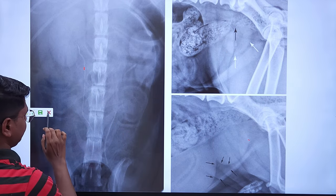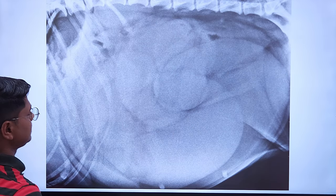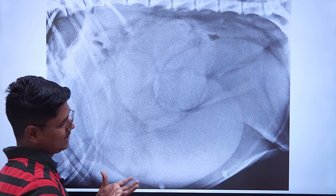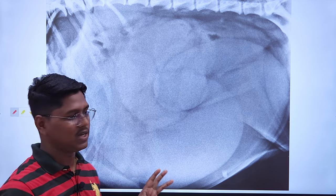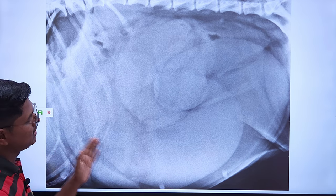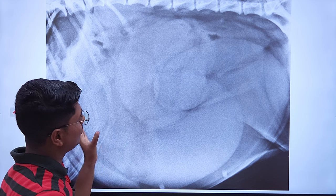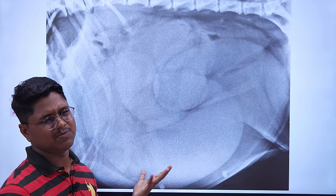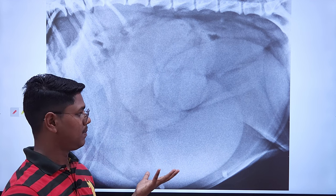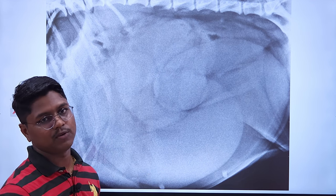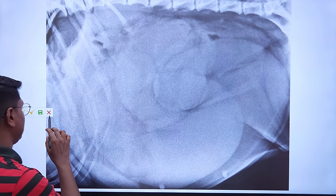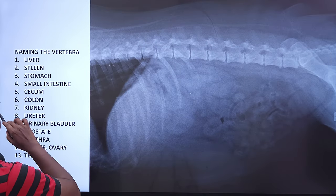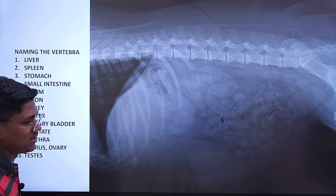This is a case of pyometra — all the organs are shifted cranially and the entire abdomen is filled with the enlarged uterus containing pus. This is a pathological finding; normally the uterus is not visible on radiographs.